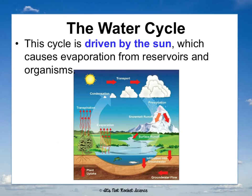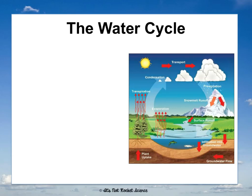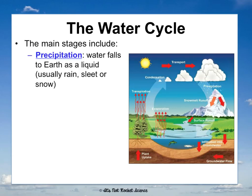The water cycle is driven by the sun. Without the sun it can't happen, because the sun causes evaporation — it causes water to return to the atmosphere. We're going to talk through six main steps of the water cycle. First is precipitation, which is water falling from the sky: rain, sleet, snow.